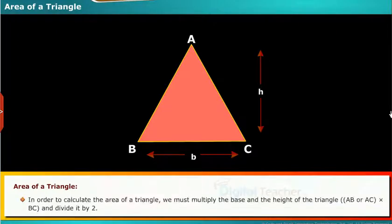In order to calculate the area of a triangle, we must multiply the base and the height of the triangle, AB or AC into BC, and divide it by 2.